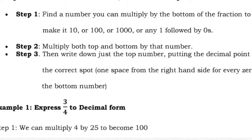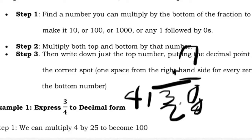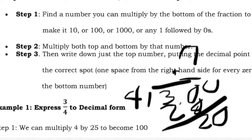Another way to express a fraction as a decimal is to simply divide the numerator by the denominator. So 3 divided by 4: add a decimal point and zero, giving 30 divided by 4 is 7, so point 7. Seven times 4 is 28; 30 minus 28 is 2. Add zero: 20 divided by 4 is 5. So 3/4 equals 0.75.